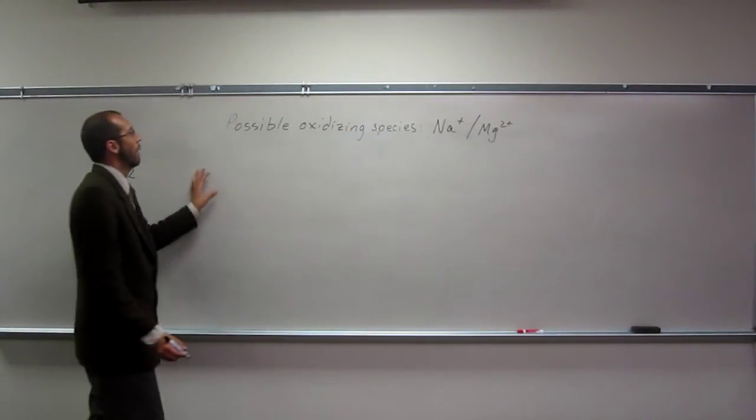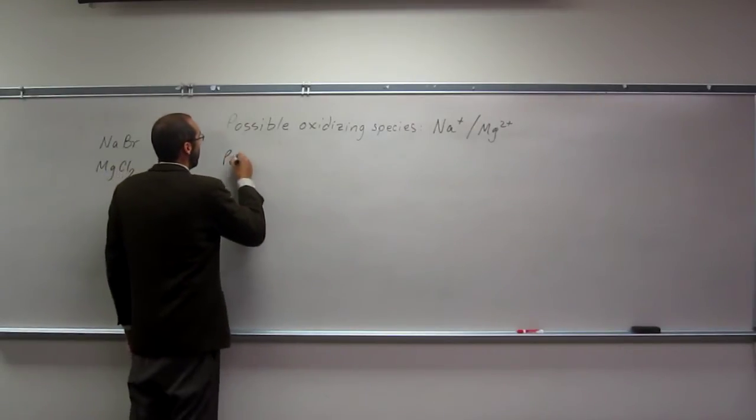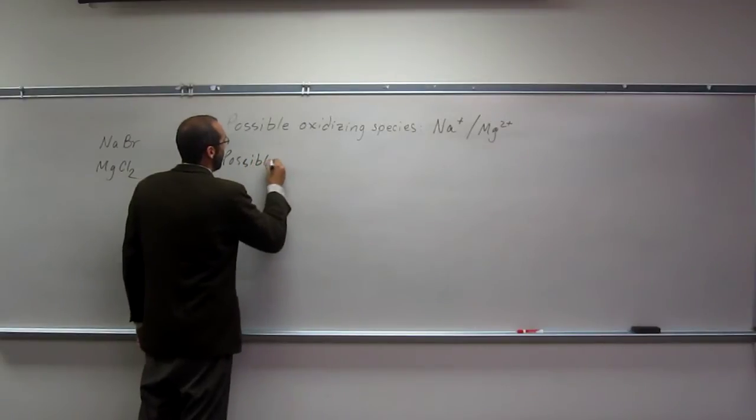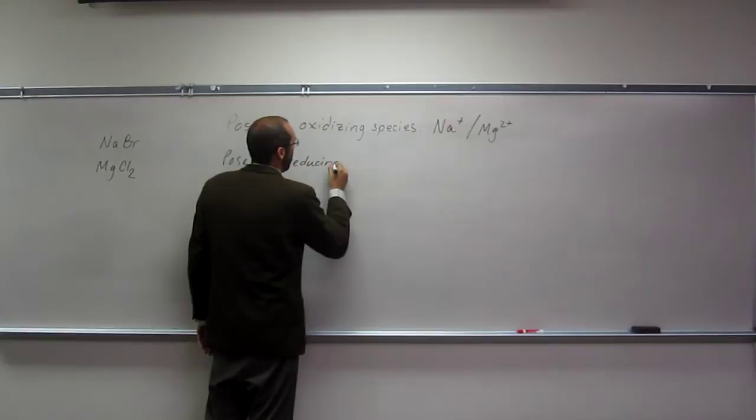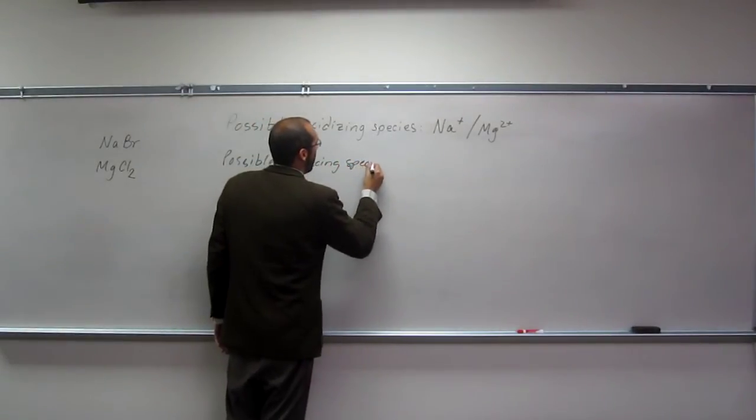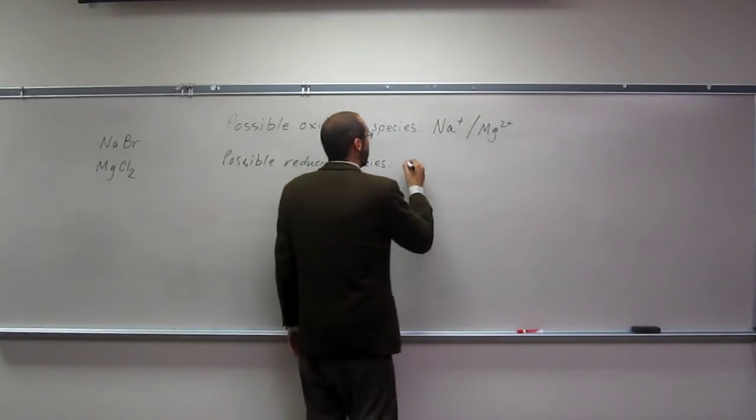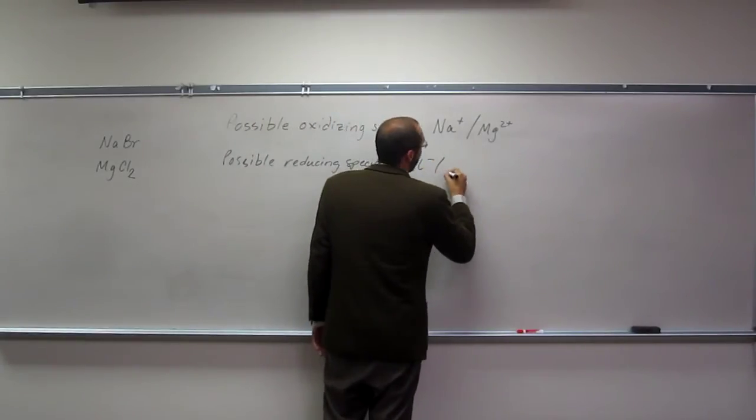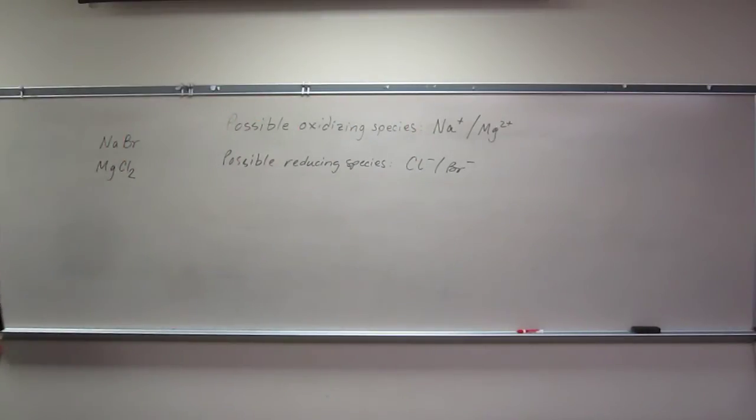The possible reducing species are going to be the two anions: Cl minus and Br minus. How do we know which one gets reduced and which one gets oxidized?